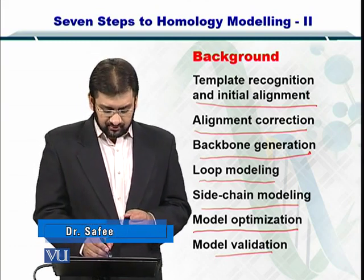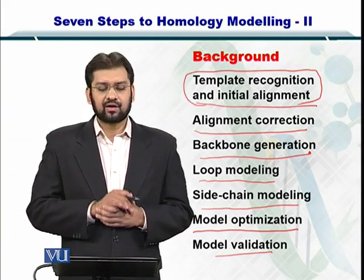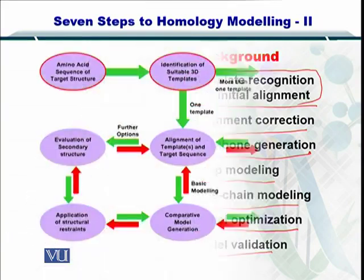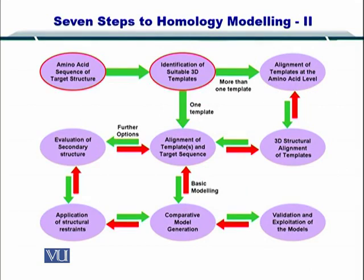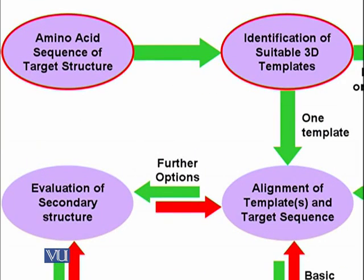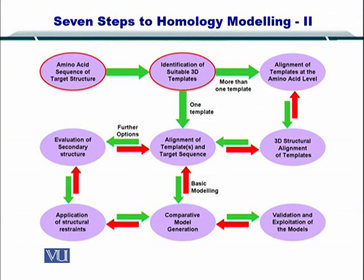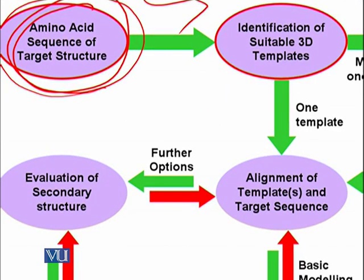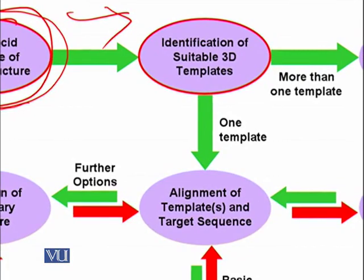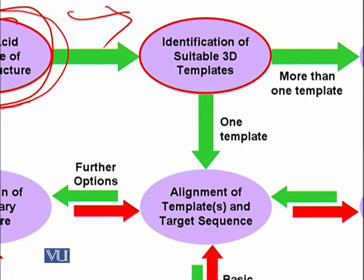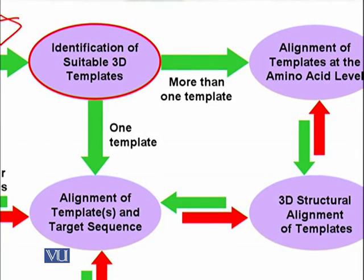In this module we are going to look at the first step in detail, that is template recognition and initial alignment. If you would remember, this was the flow chart for looking at homology modeling as well as ab initio and fold recognition. We are going to start from here and move towards identification of suitable 3D templates. So we started from the amino acid sequence of the target structure and we now want to identify suitable 3D templates which could be used for the prediction of the structure.